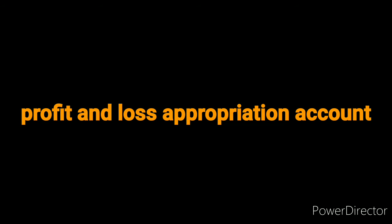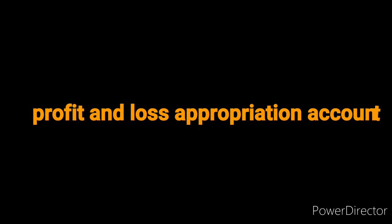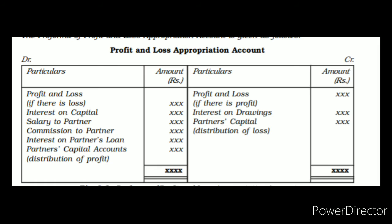Distribution of profit: the profit and loss appropriation account is prepared after the profit and loss account. In a partnership firm, the net profit or net loss is distributed to partners as per their profit and loss sharing ratio. If the deed is accepted, remuneration is given to partners, interest on drawings is charged, and interest on capital is provided. These adjustments are all done through the profit and loss appropriation account.